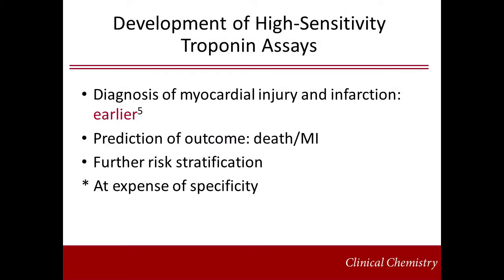At the forefront of discussion is the development of high-sensitivity troponin assays. The definition of a high-sensitive assay would be one that has a total imprecision of less than 10% at the 99th percentile, and some would propose also being able to quantitate over 50% of normal values below that 99th percentile. Although in the United States there are no FDA-approved high-sensitive assays, there are many in development and being used for research use only. Several other high-sensitive troponin assays are already in use worldwide. Their use has been shown to diagnose myocardial infarction earlier, provide greater prediction of death or future MI, and yield an improvement in risk stratification. It should be noted that the improvement in sensitivity is at the expense of specificity.